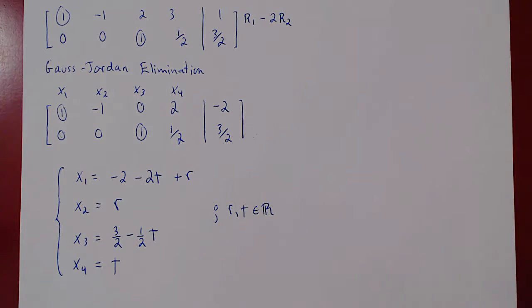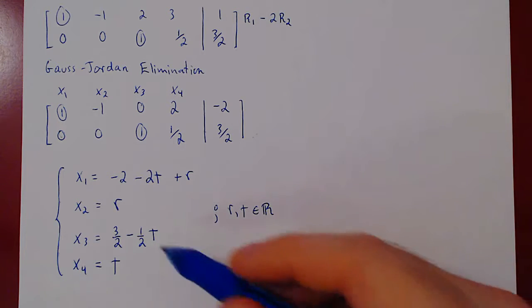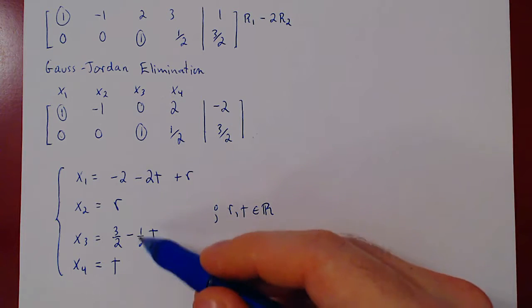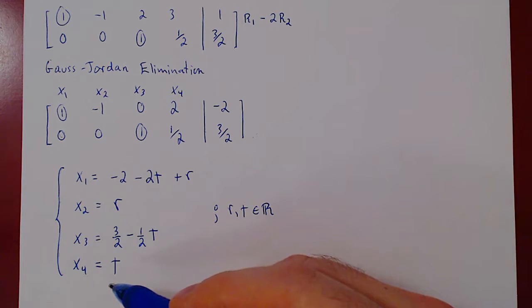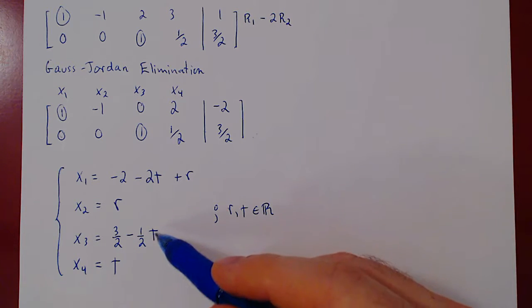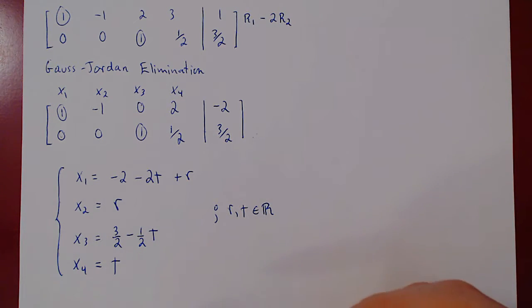And now we have our solution set. If you notice though, we can do a little better. As t here is multiplied by 1 half, we can replace t by 2t. And this will get rid of this fraction. Not a big improvement, but we'll do it nonetheless.